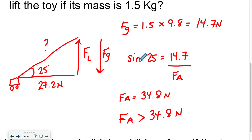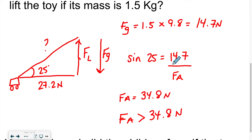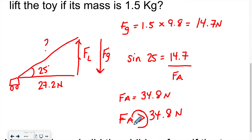To summarize: force of gravity is mass times 9.8, giving Fg = 14.7 Newtons. To lift the object, the lifting component must exceed 14.7 Newtons. Using sine of the angle (opposite over hypotenuse), the applied force that equals that threshold is 34.8 Newtons — so the applied force must be greater than 34.8 Newtons. This part has a few extra steps but hopefully it's clear.